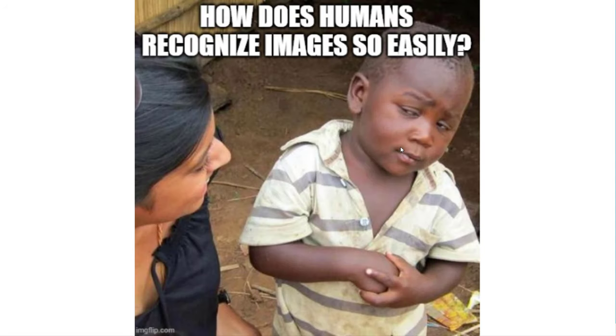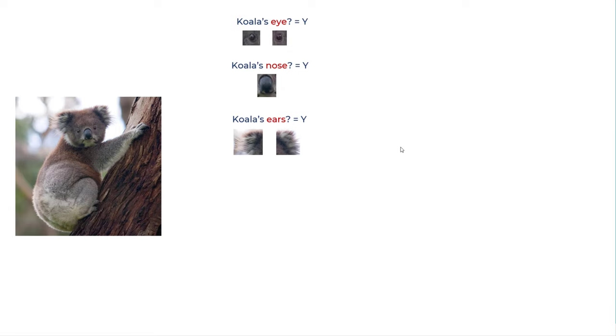So how does human recognize this image so easily? Let's go into the neuroscience little bit and try to see how we as humans recognize any image so easily. When we look at koala's image, we look at the little features like this round eyes, this black prominent flat nose, this fluffy ears, and we detect these features one by one.